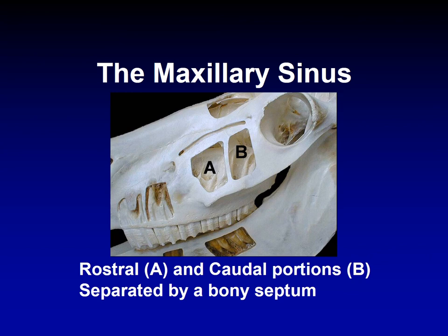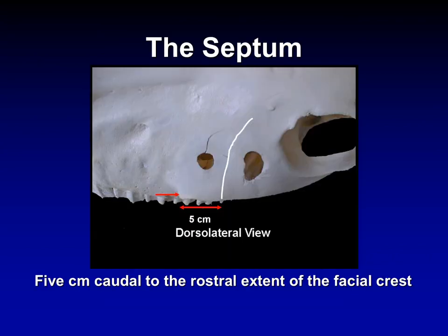A and B in this picture represent the rostral and caudal portions of the maxillary sinus — rostral is A, caudal is B — separated by a bony septum. This is a very important structure. The bony septum is located about 5 centimeters caudal to the rostral end of the facial crest, which we saw in the very first lecture on the external features of the equine skull.